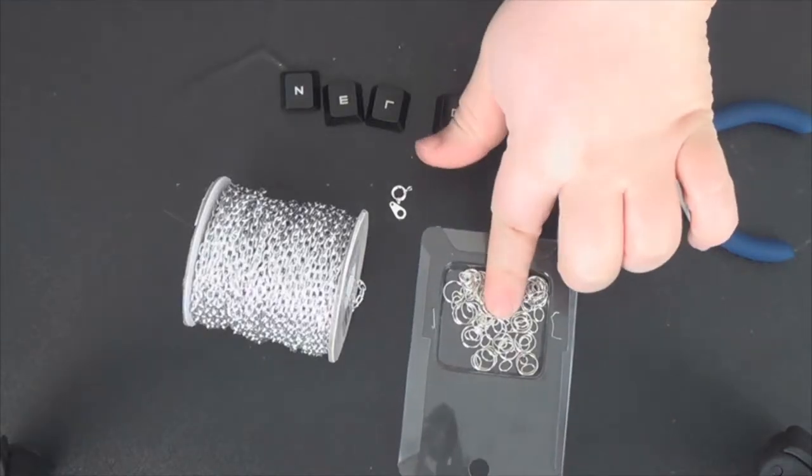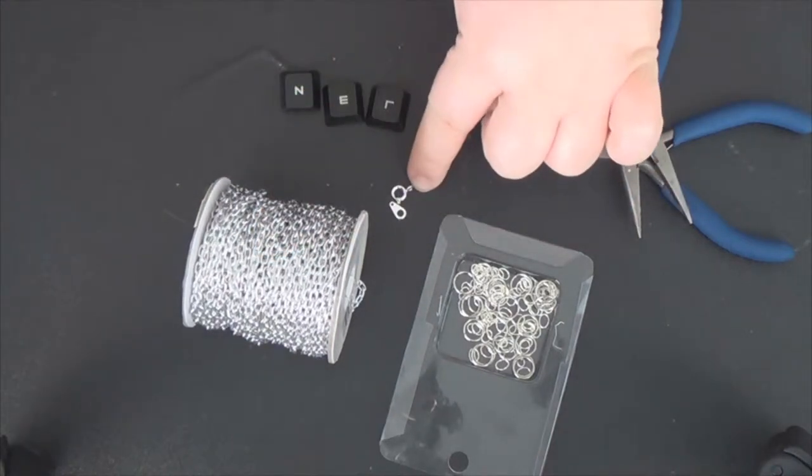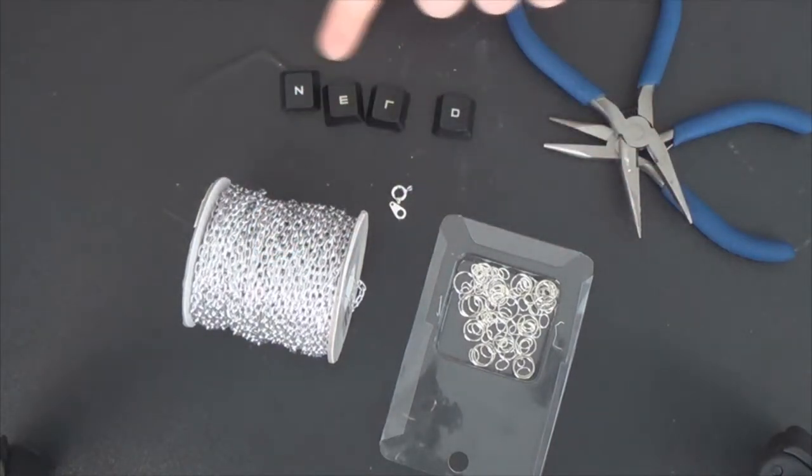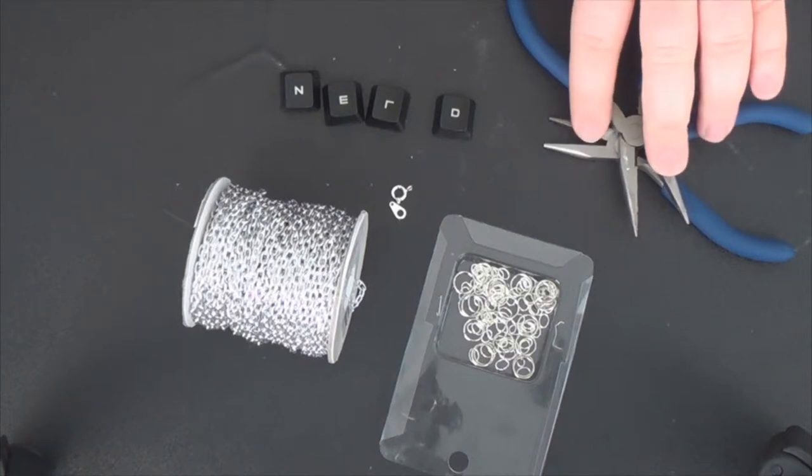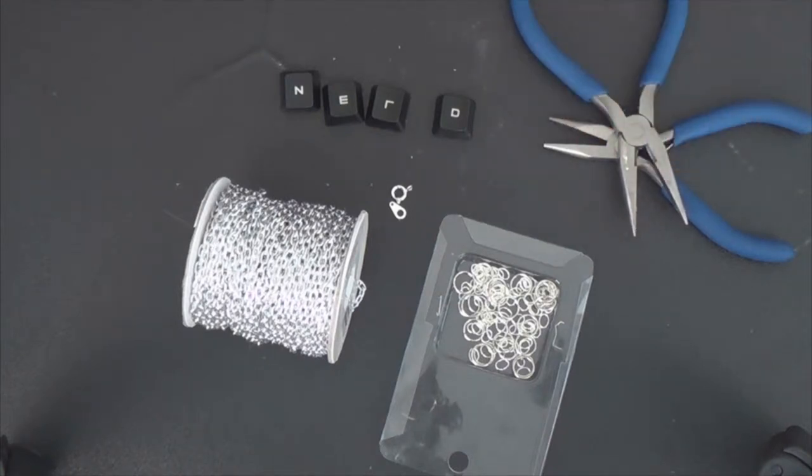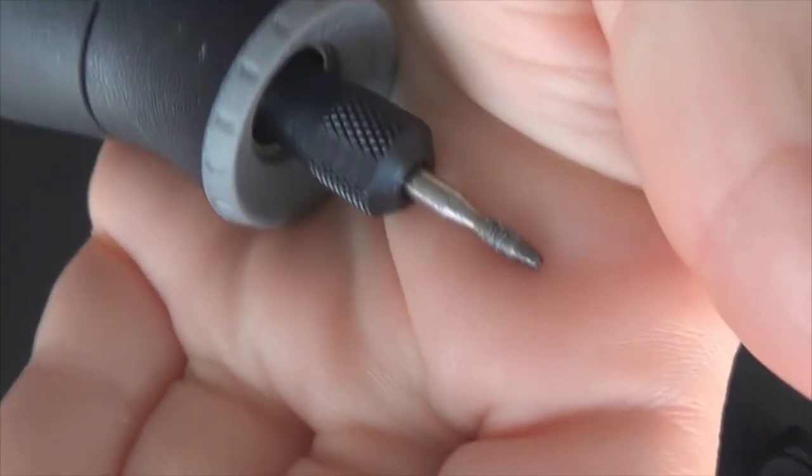For this DIY, you're going to need jump rings, silver chain, a spring ring with a holder, keyboard keys—I'm doing mine in the letters to spell out NERD—two needle nose pliers, and of course, a Dremel with a pointy bit attached to it to make your holes.